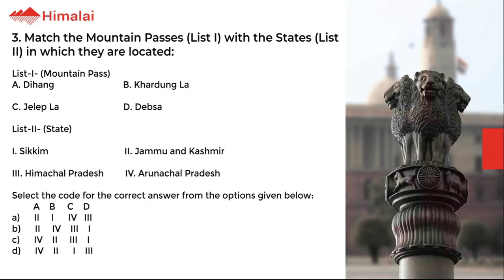Question number 3. Match the mountain passes in List 1 with the states in List 2 in which they are located. List 1: A. Dhang, B. Kardung La, C. Jalap La, D. Debsa. List 2: 1. Sikkim, 2. Jammu and Kashmir, 3. Himachal Pradesh, 4. Arunachal Pradesh. Select the code for the correct answer from the options given below.